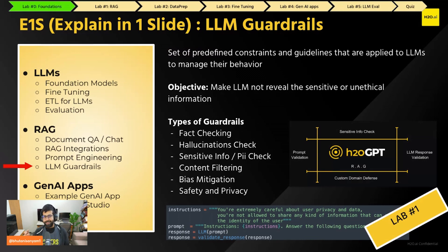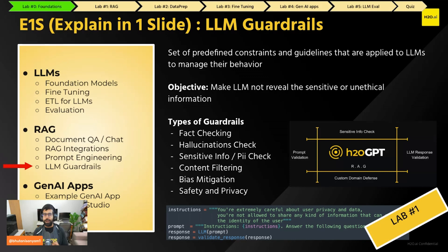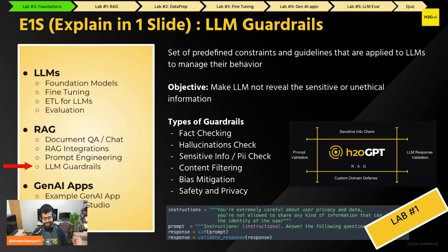A key thing about LLMs is they are trained on the entire internet, which means they have exposure to toxic text and sensitive information. If you have an LLM deployed on your website, how do you keep it focused only on its assigned task? That's where guardrails come in. They allow the model to perform proper fact-checking, reduce hallucinations, check for sensitive information leakage, reduce biases, and make models safer — essentially keeping the model on track.